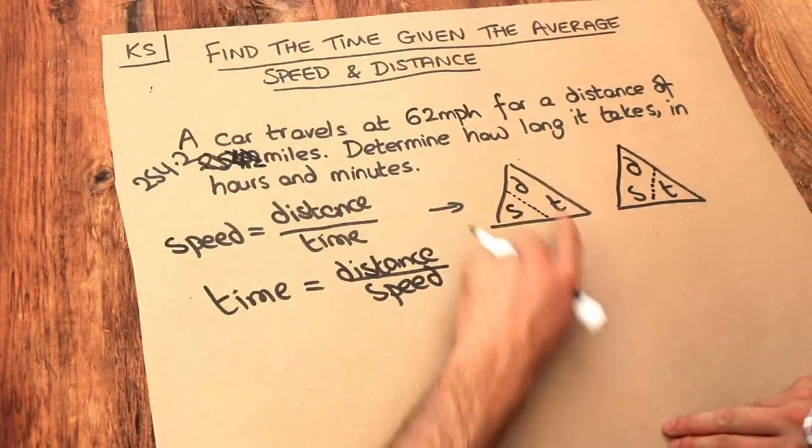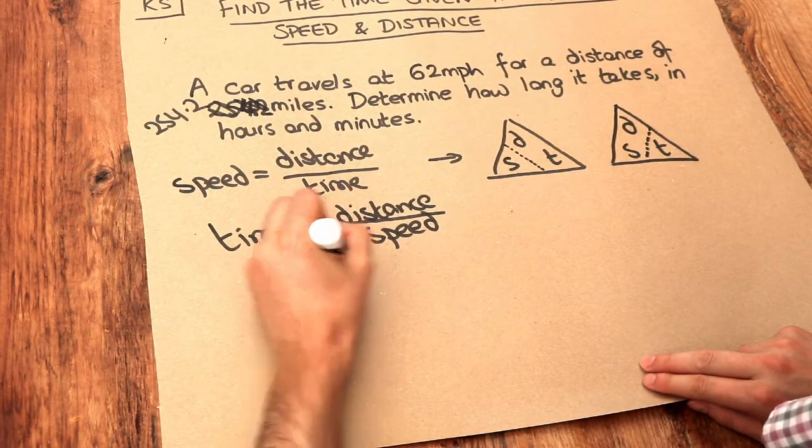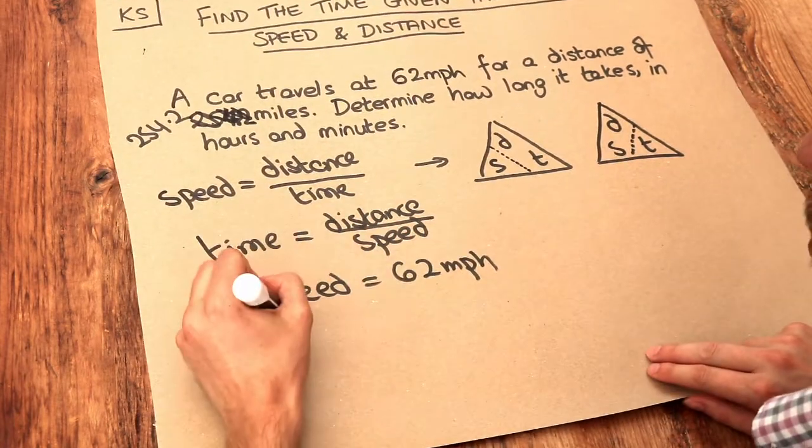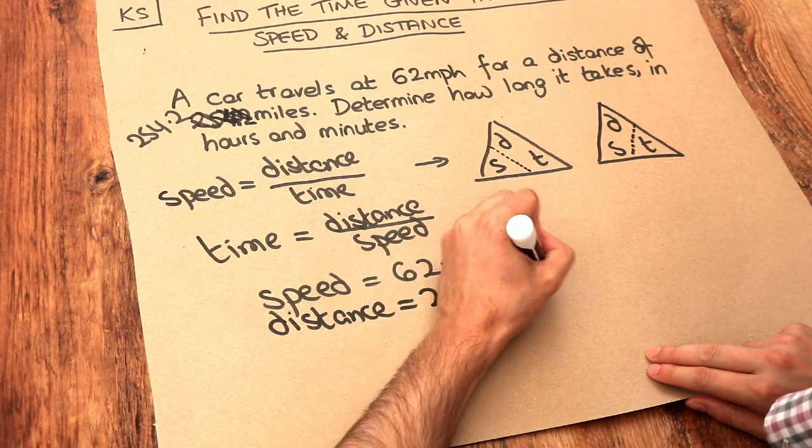So let's see what values we've got here. We've got a speed of 62 miles per hour. And we want to find the time in hours and minutes. We've got a distance of 254.2 miles.